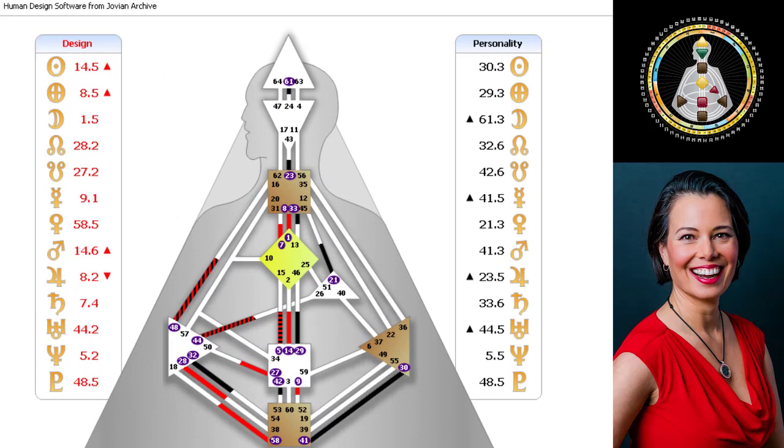We are a totality. So at this point, in order for us to understand it, we have to break it down into pieces. But don't get stuck on the pieces and blame or decide because you see something in the body graph.